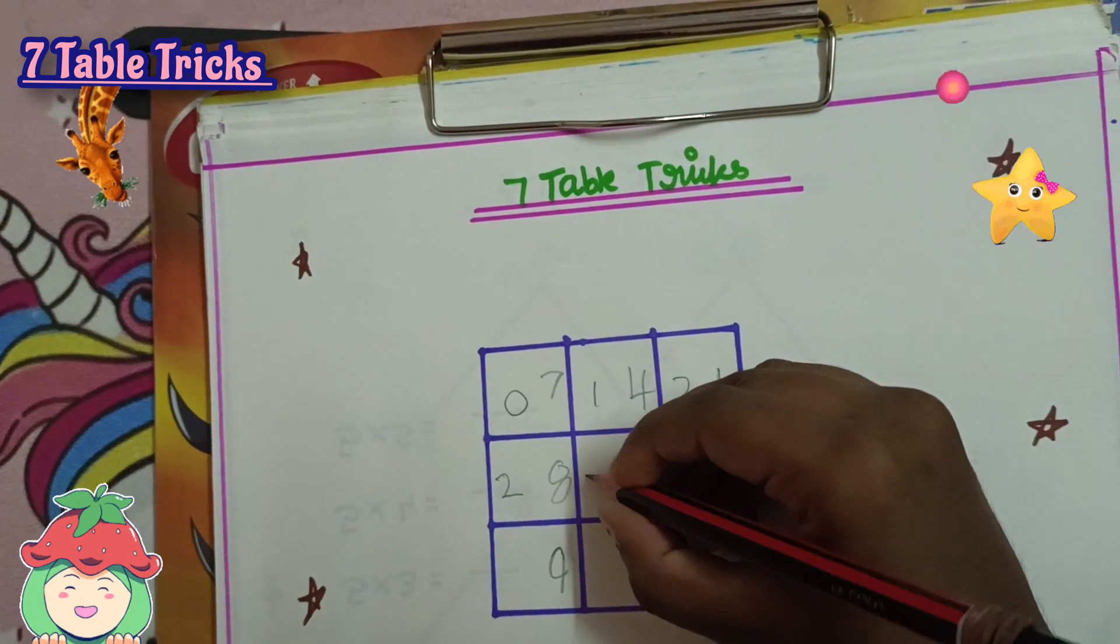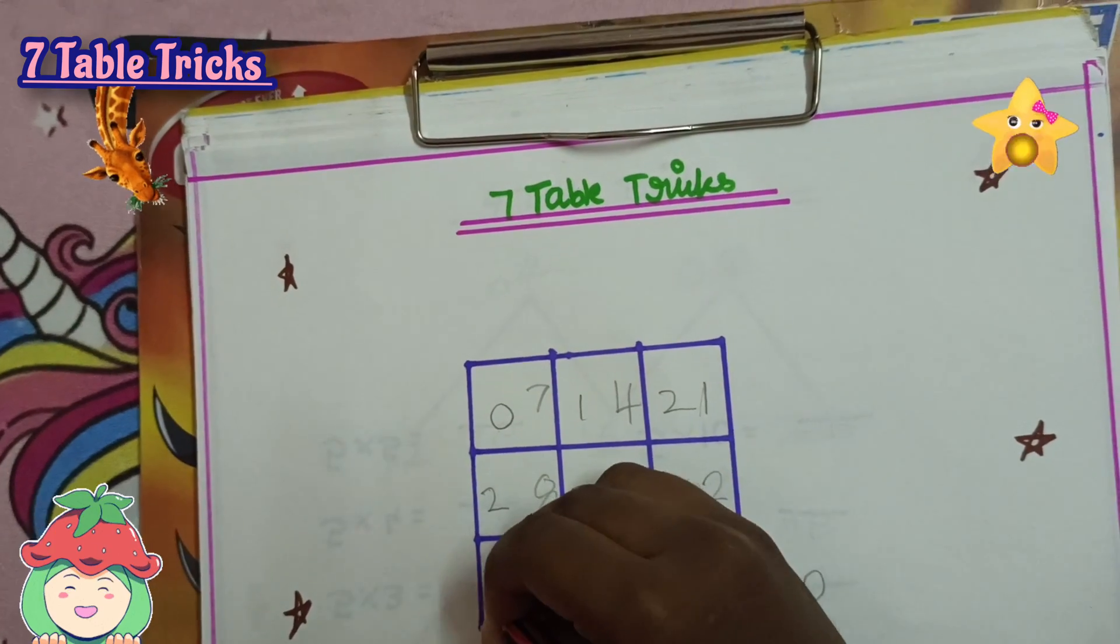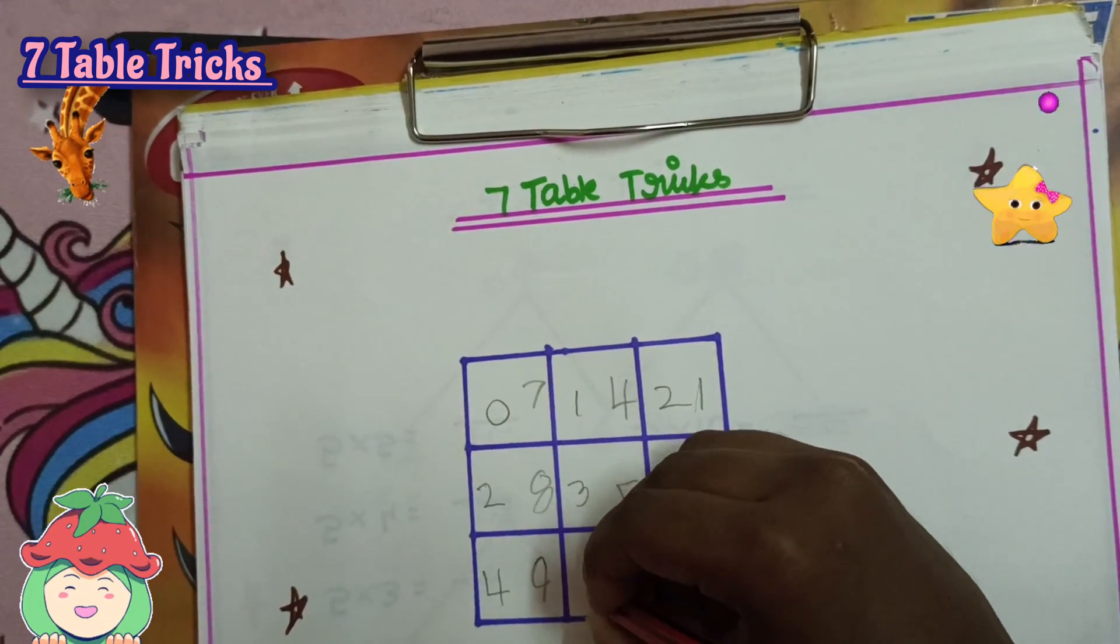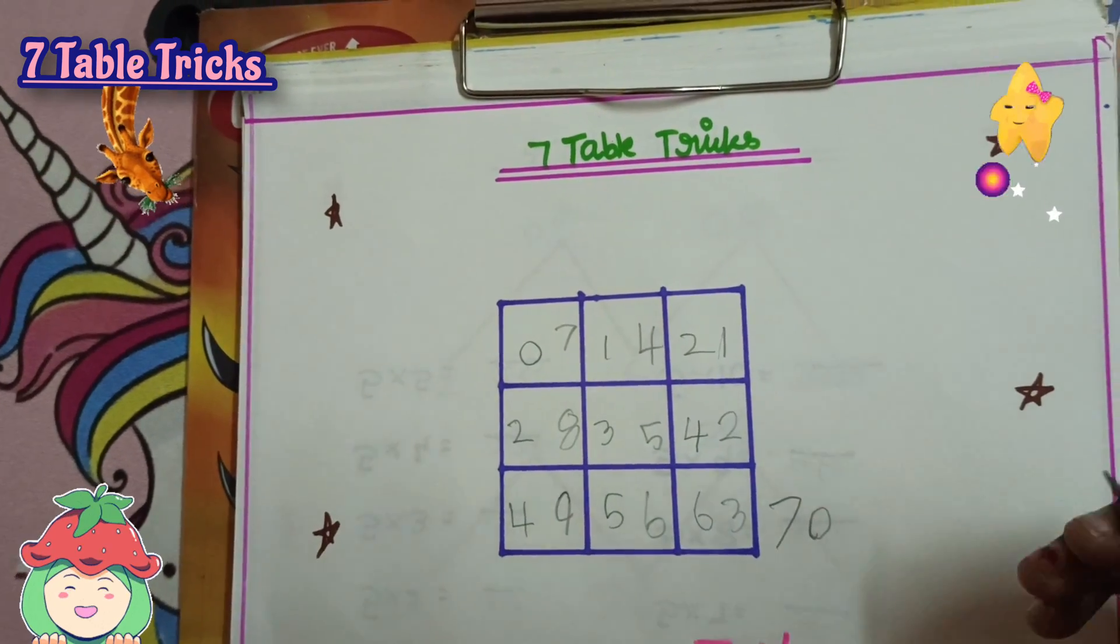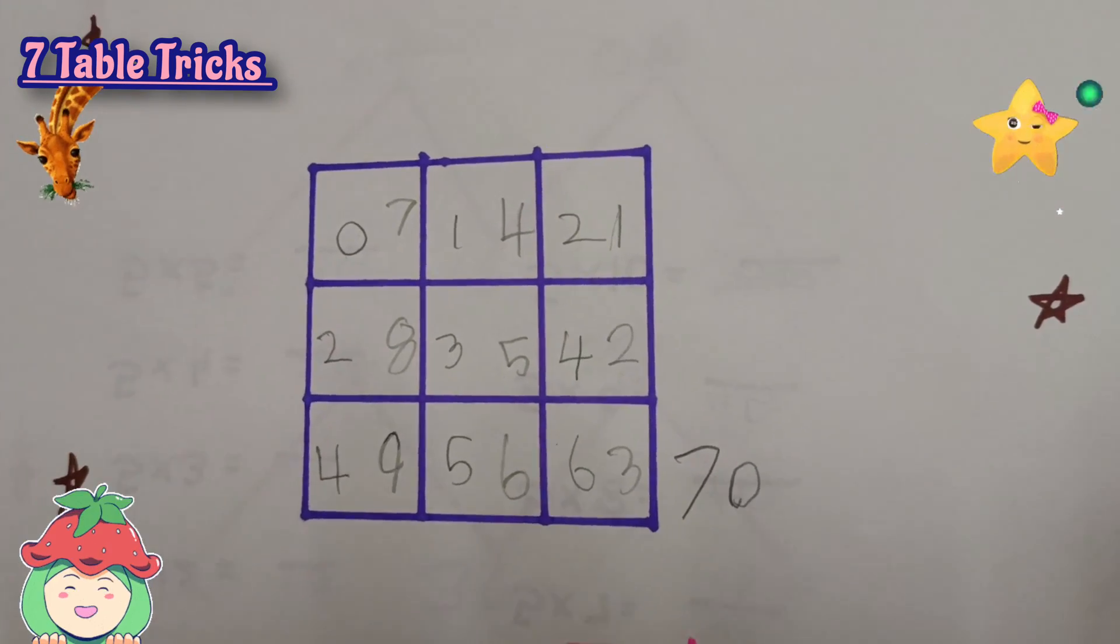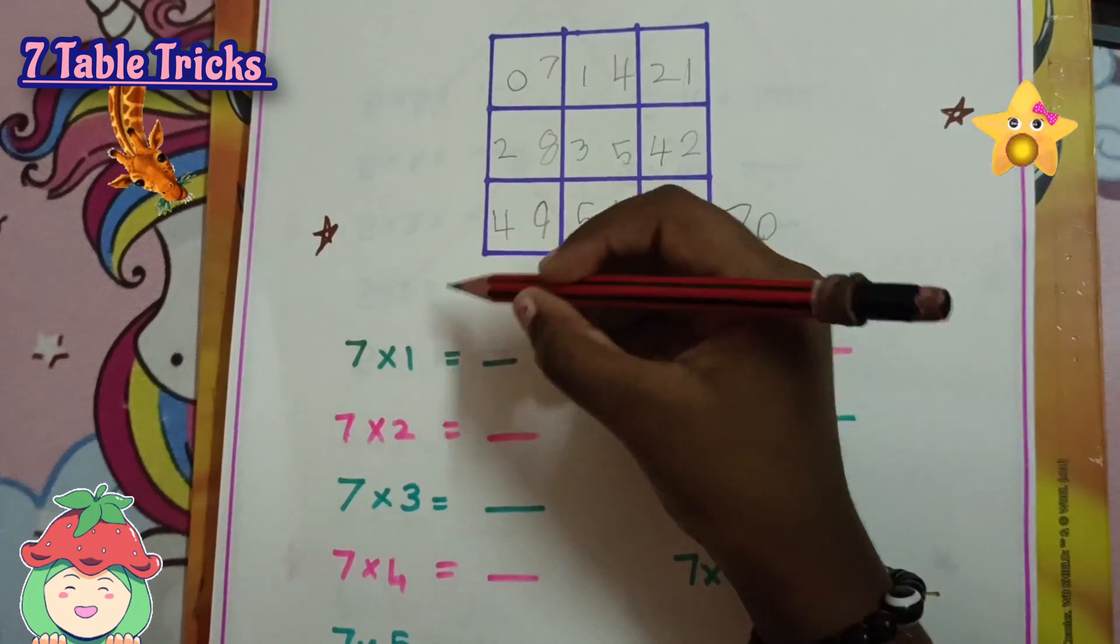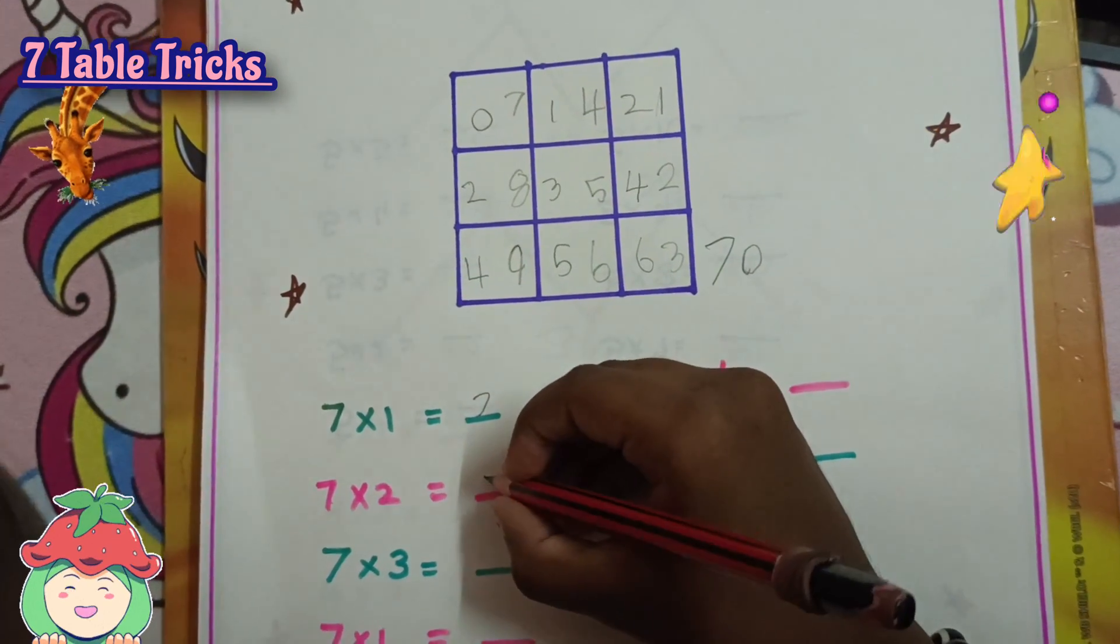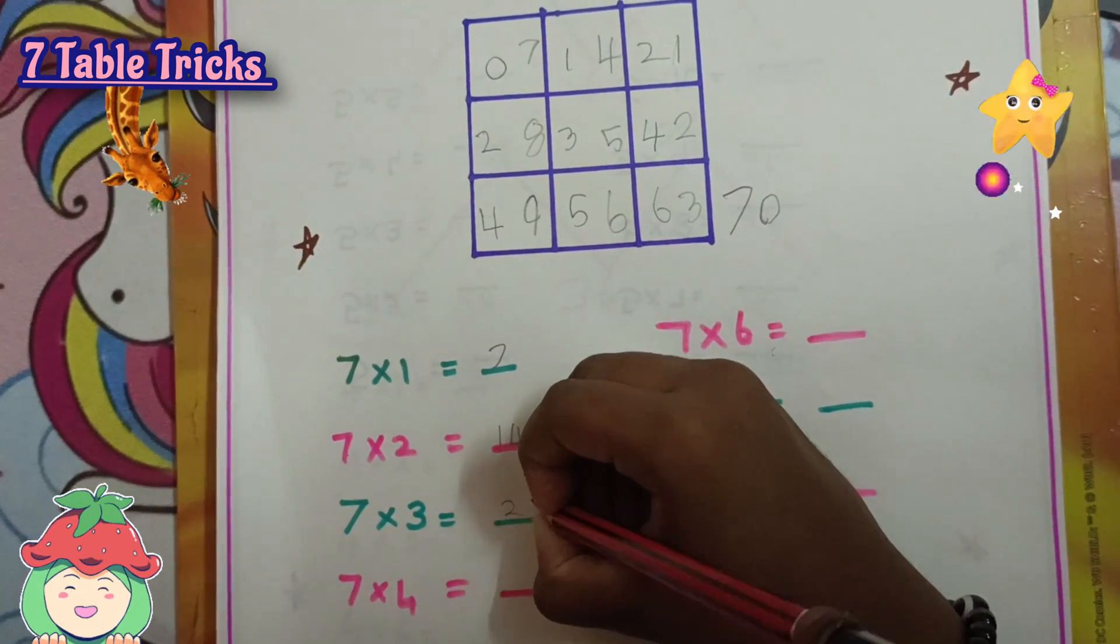This will be 7×1 and there are 7 tables which are the multiples. The last 7, 14, 21.